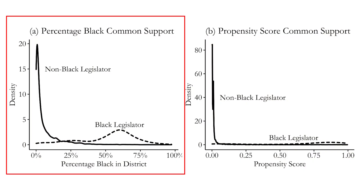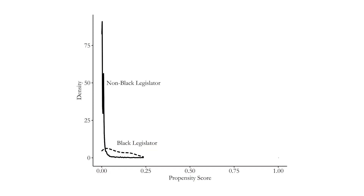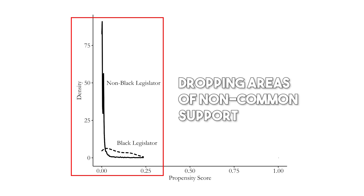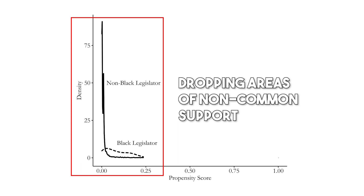When we have this, a common solution is simply to trim or drop observations for which there is not common support. For example, we might look at the graph and say there are a lot of Black legislators in areas with 50–75% Black, but there are simply not enough non-Black legislators to compare them to, so we have to drop those Black legislators. This means dropping everyone with a particularly high propensity score, keeping only the low propensity score range where we can actually compare people — this is called dropping areas of non-common support.